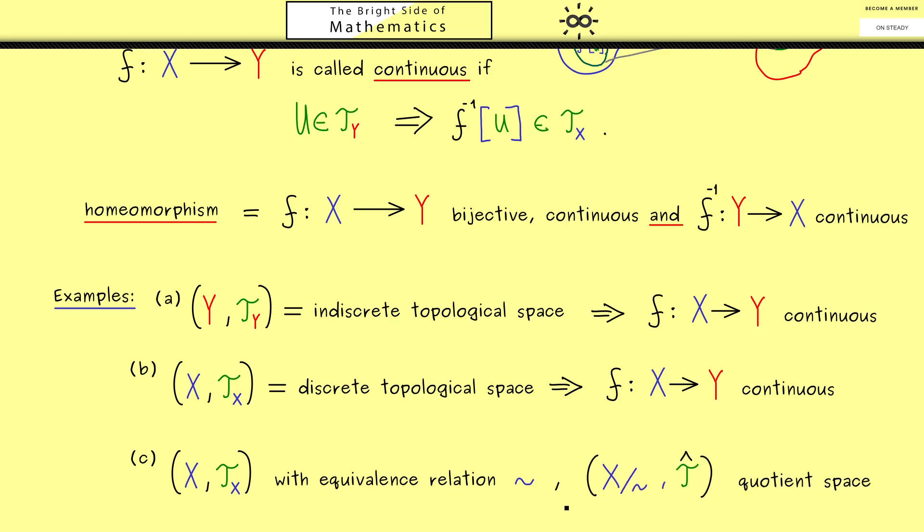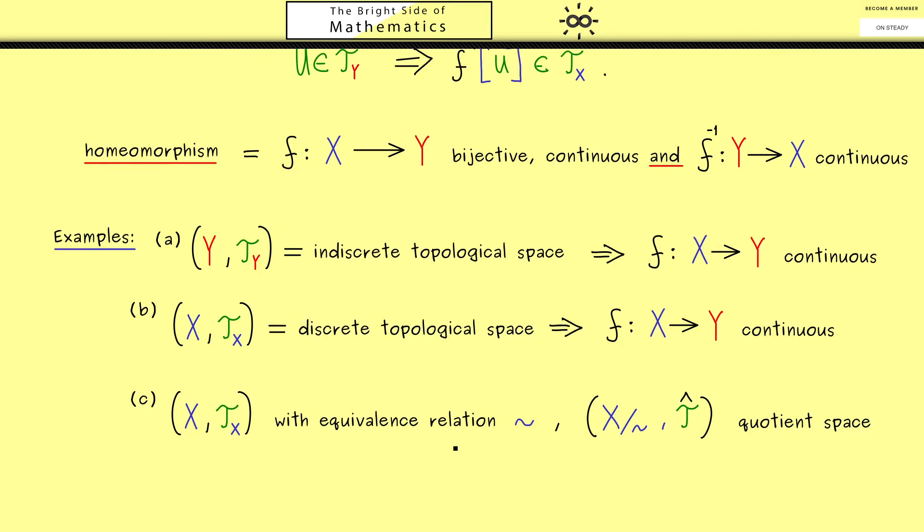So you already know we can form a new topological space and we simply call it the quotient space. Moreover, we have found that we have the so-called canonical projection. Indeed this one we simply called q and it maps x to the equivalence class of x.